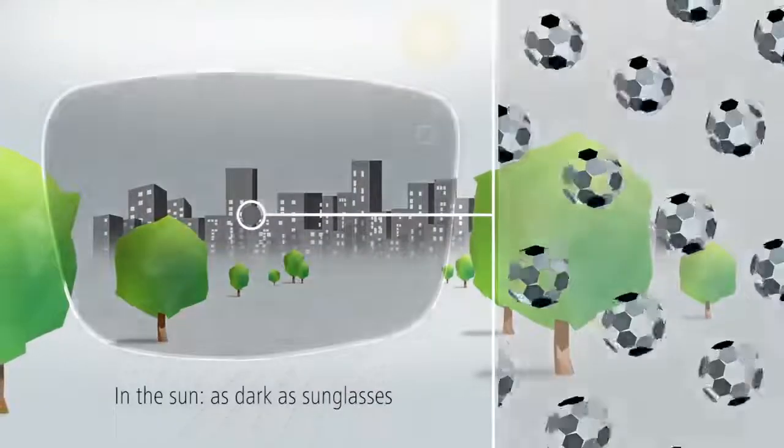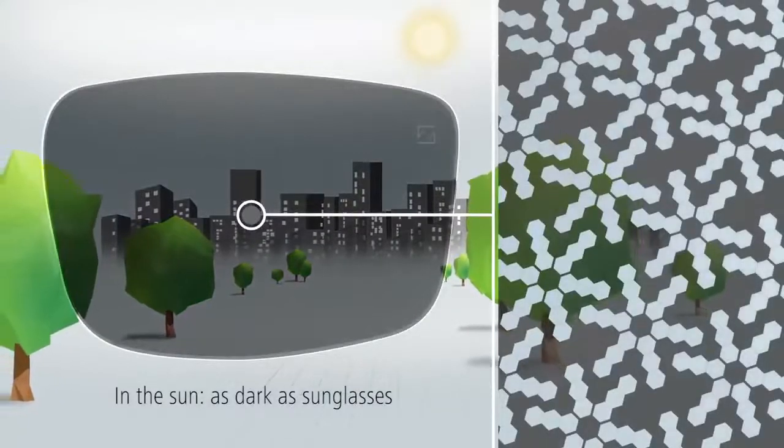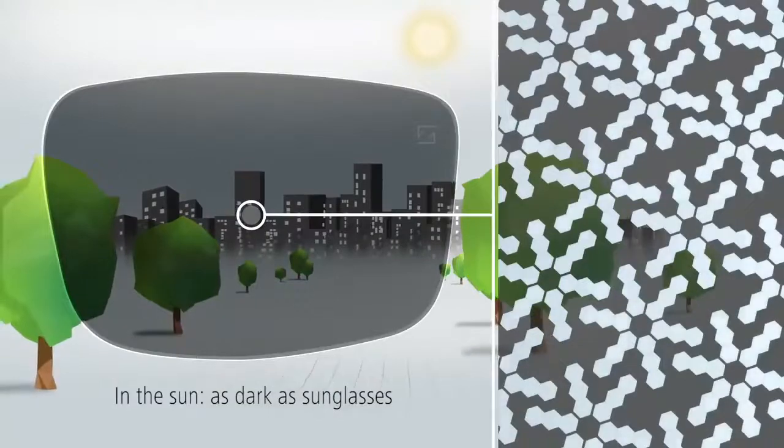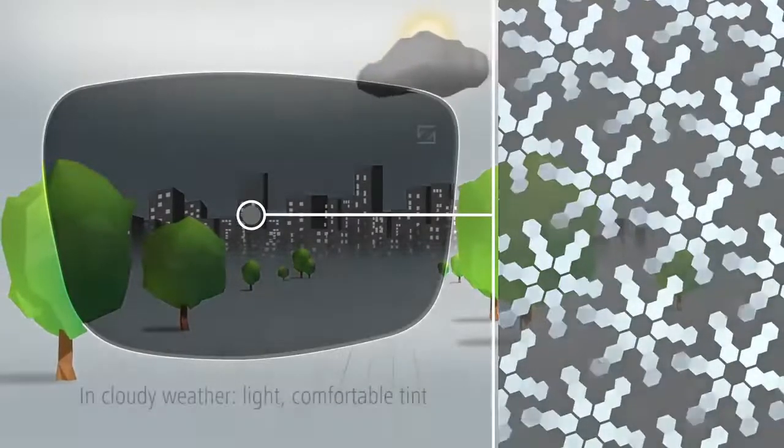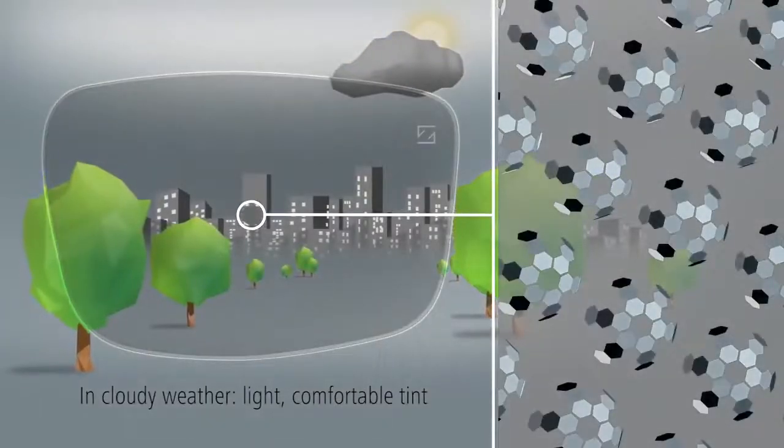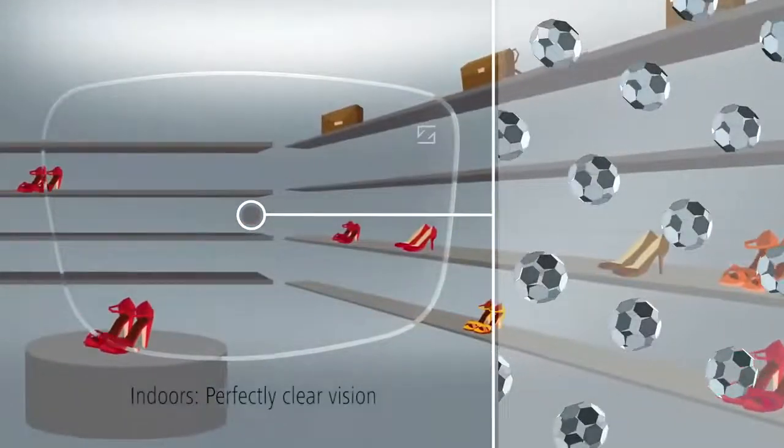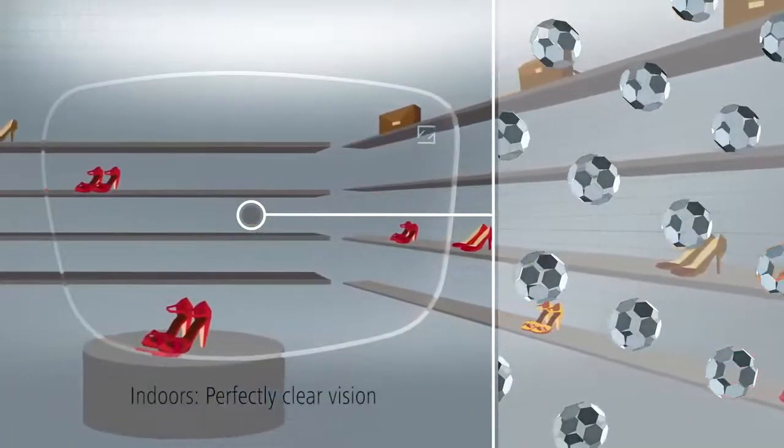In sunshine, the molecules open and make the lenses as dark as sunglasses. On a cloudy day, photo fusion offers a light, comfortable tint. Indoors, the photo-active molecules close again to provide perfectly clear vision.